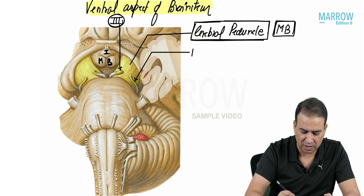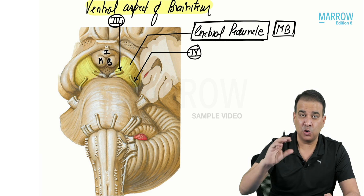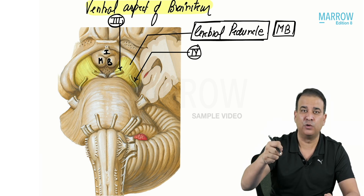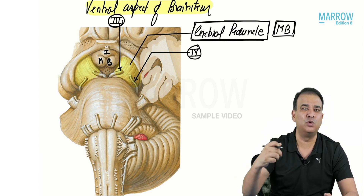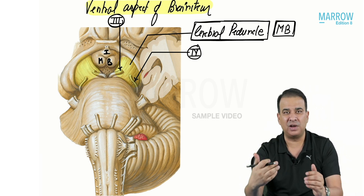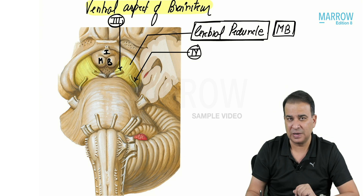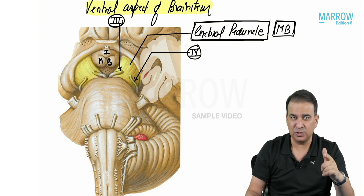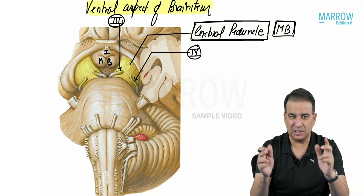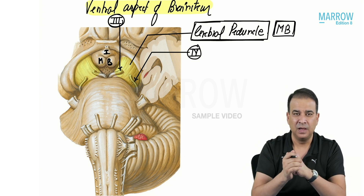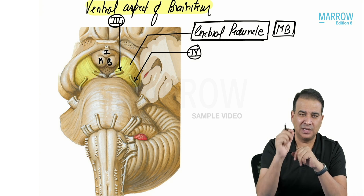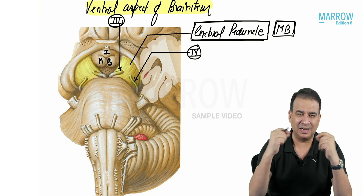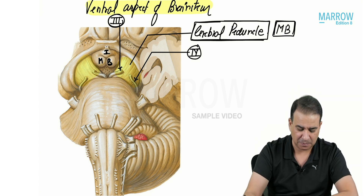The fourth cranial nerve is the only nerve which emerges from the dorsal aspect of the brainstem. You're looking at the fourth nerve from the front right now — when I show you the brainstem from the back, you will see it again. So the fourth nerve is the only nerve you will see from both the ventral and the dorsal aspect. The fourth nerve is also the thinnest cranial nerve, coming from the dorsal aspect of the brainstem.